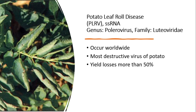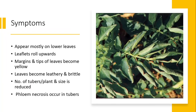The symptoms of this virus appear mostly on the lower leaves. Leaflets roll upward, and margins and tips of the leaves become yellow. Leaves become leathery and brittle. The number of tubers per plant and their size is reduced. Phloem necrosis also takes place in the tuber.